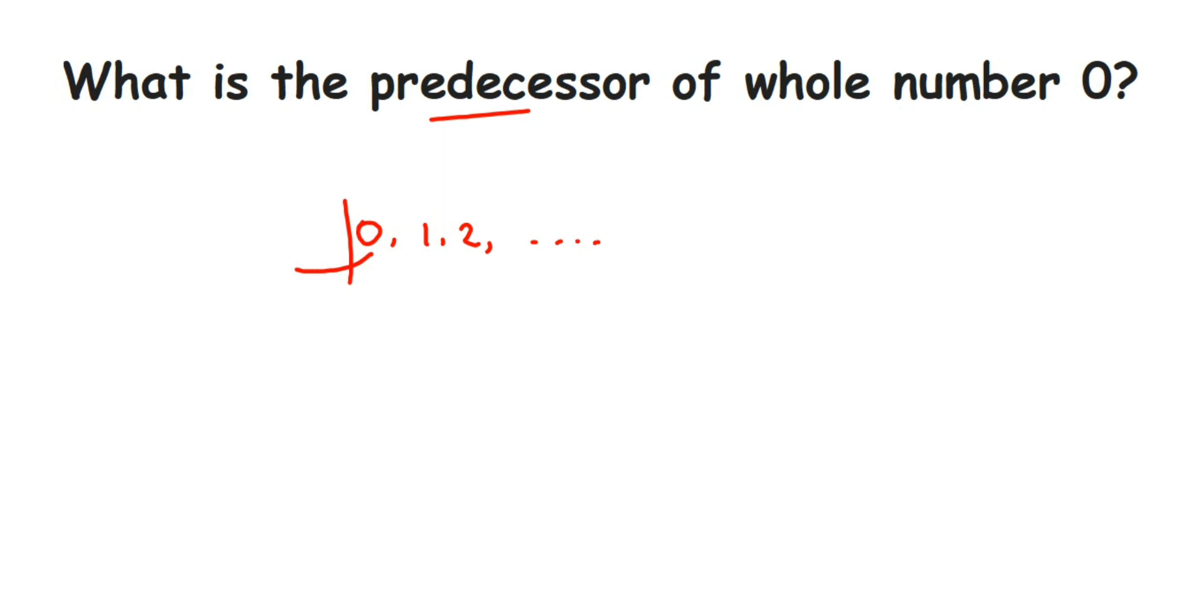So we can say there is no predecessor for zero. We cannot find the answer because there is no such number. The answer is: whole number zero has no predecessor.